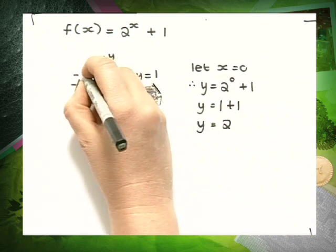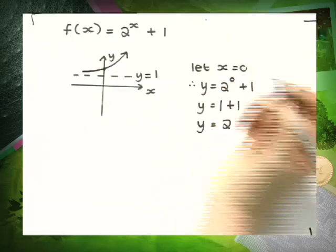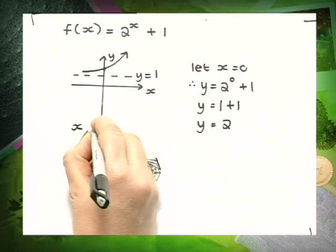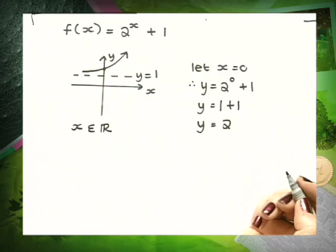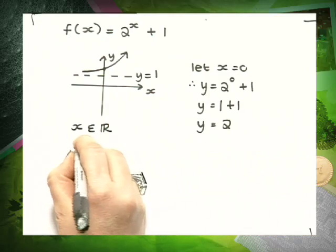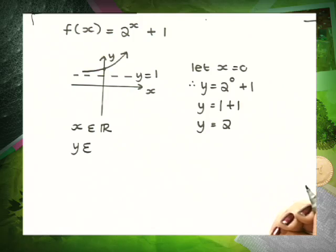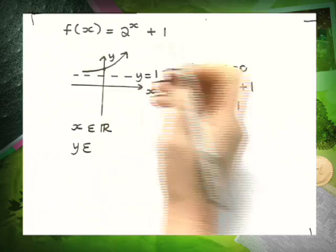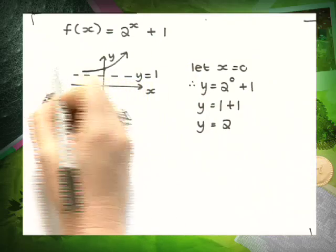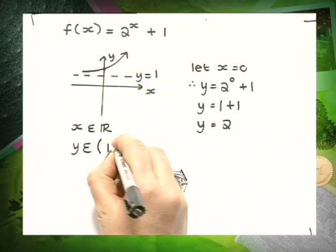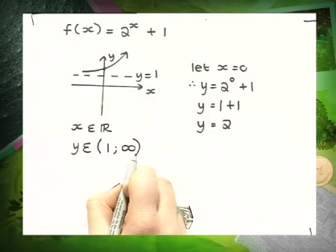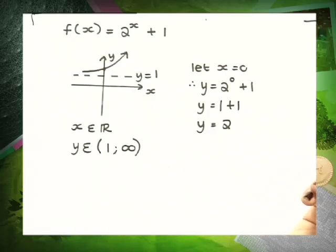We can now draw our exponential function. The domain is x, an element of real numbers. The range is influenced by the asymptote. Our exponential function is heading towards positive infinity, and it is also heading towards a y-value of 1. So our range will be from 1 to infinity. They both have round brackets because we cannot reach those two points.